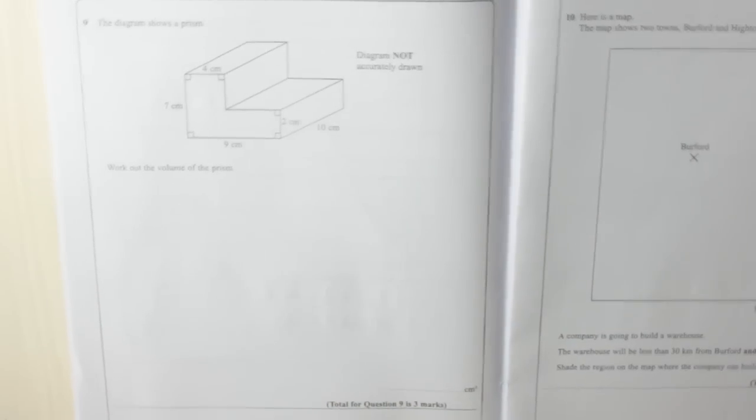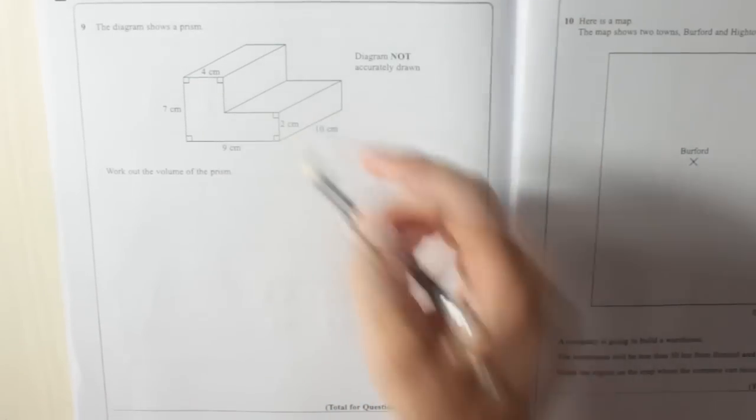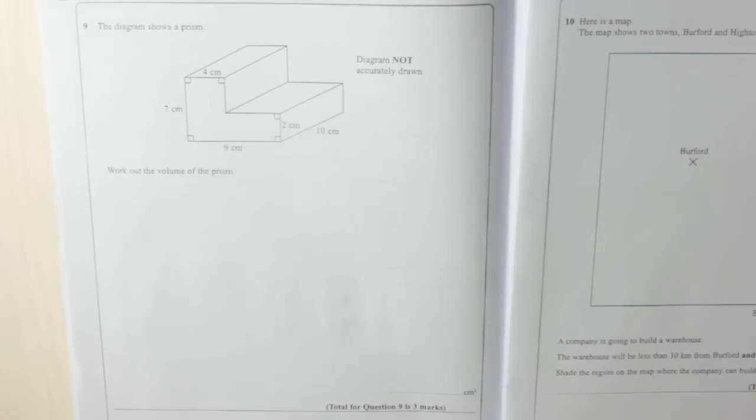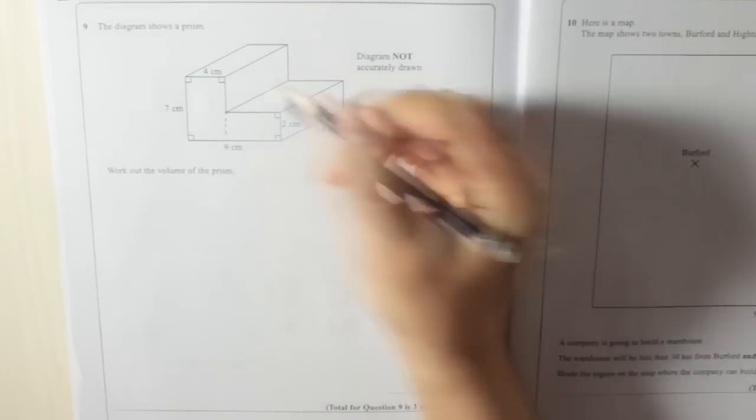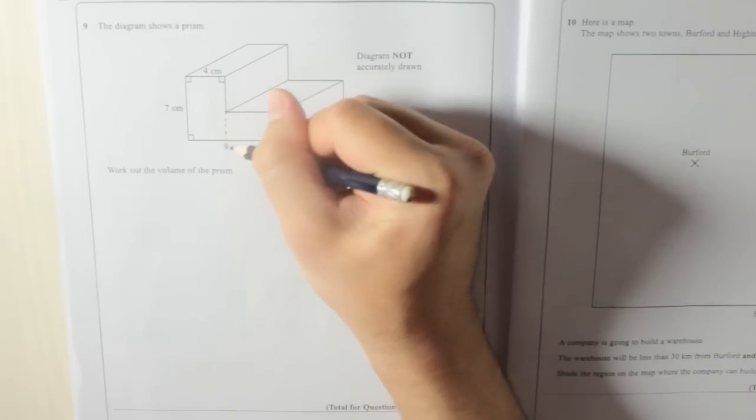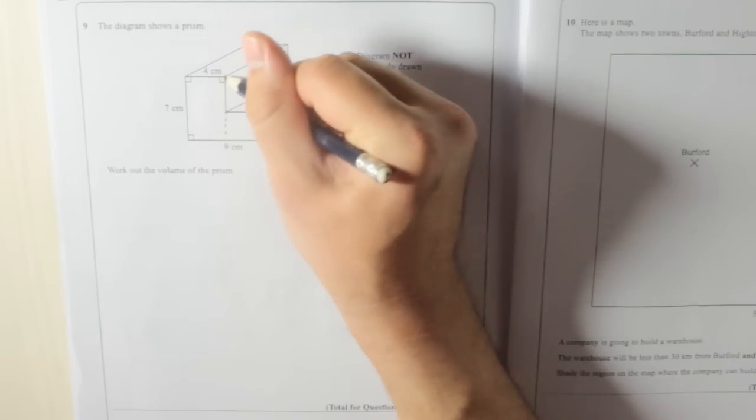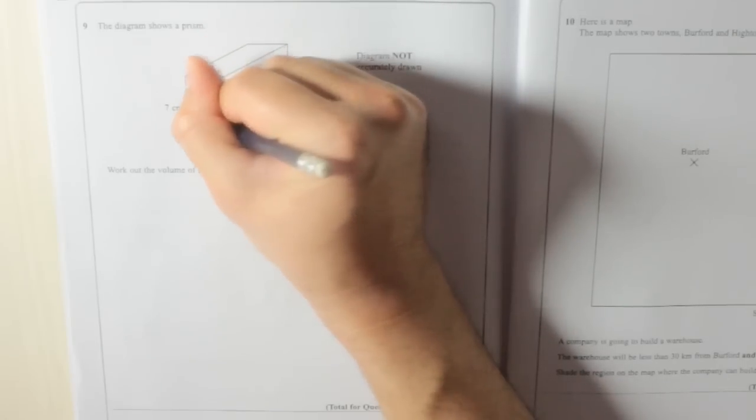So we need to find the area of this L shape. What we're going to do to do that is we're going to split it into two rectangles. It doesn't matter which way you go. I'm going to go down. So the top rectangle is 4 times 7, 28 cm².